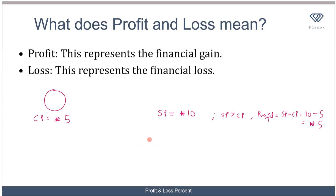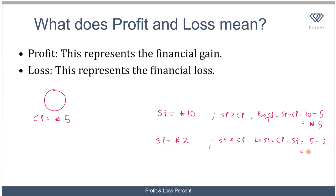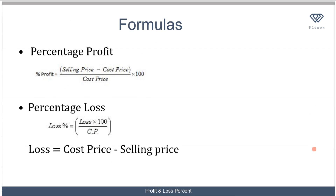However, if you sell the orange for 2 naira — maybe the orange became spoiled and you have to sell it at a lower price than you bought it — then your selling price is less than your cost price, so you are making a loss. Your loss is the cost price minus the selling price, which is 5 minus 2, equal to 3 naira.